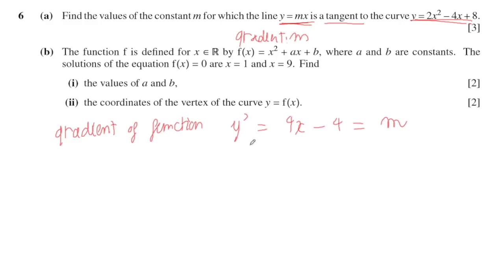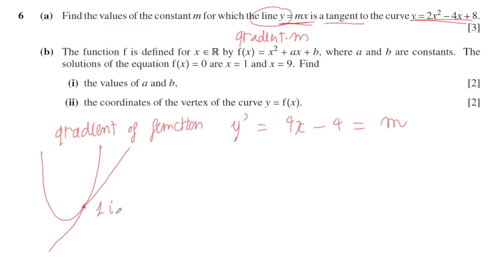Another approach you can use is: since the tangent and the line have only one intersection point, for example if I have a curve like this and a tangent line here, the curve and the tangent meet at only one point. This means the curve and the line have only one solution.